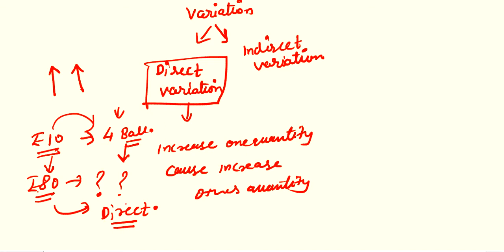Before solving questions, while reading a question you should know whether the particular question is related to direct variation or indirect variation. Indirect variation is opposite of direct variation.